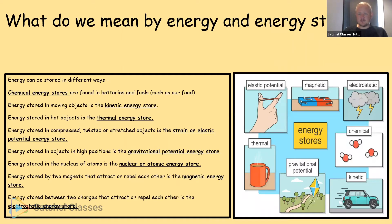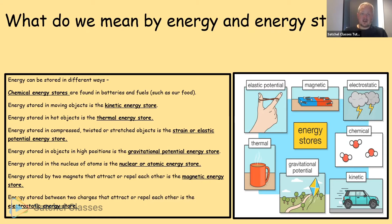Energy can be stored in different ways. Chemical energy stores are found in batteries and fuels such as food, petrol, diesel, wood, oil, and gas. Energy stored in a moving object, like a fast-moving car, is the kinetic energy store. Energy stored in hot objects — a hot cup of tea, a fire, a toaster — is the thermal energy store. Energy stored in compressed, twisted, or stretched objects is the strain or elastic potential energy store.